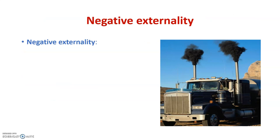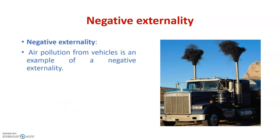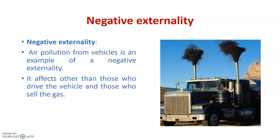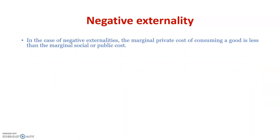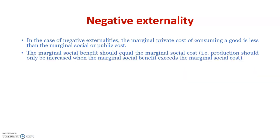Here is an example of a negative externality: air pollution from vehicles affects parties other than those who drive the vehicle or sell the gas. In the case of negative externalities, the marginal private cost of consuming a good is less than the marginal social or public cost. The marginal social benefit should equal the marginal social cost.